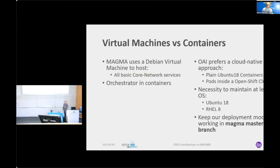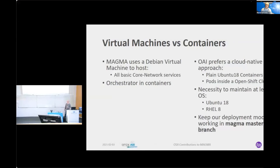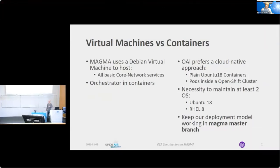Before continuing, I will talk about deployment: virtual machine versus container. The MAGMA usual development flow uses a Debian virtual machine to host all the main core network services, and the orchestrator deploys containers outside of the VM. OAI prefers a more cloud-native approach with plain Ubuntu 18 containers, and we are also deploying pods inside the OpenShift cluster here at Eurecom. That means we have the necessity to maintain at least these two OSs and keep our development model working in the MAGMA master branch, which is the reason why we are hosting a CI for OAI in MAGMA.